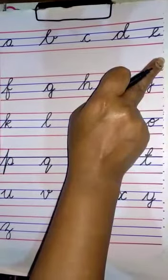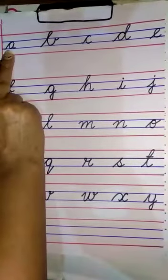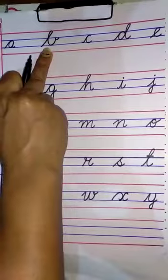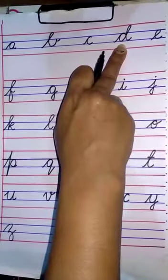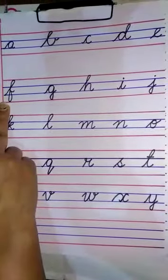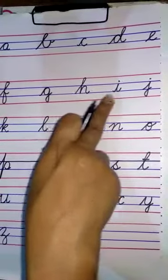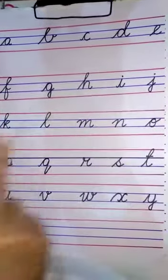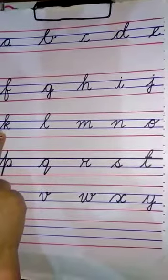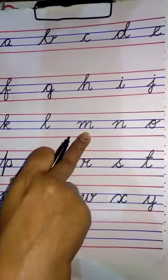Let's recall the letters once again: small cursive A, small cursive B, small cursive C, small cursive D, small cursive E. Next comes small cursive F, small cursive G, small cursive H, small cursive I, small cursive J, then small cursive K, small cursive L, small cursive M.